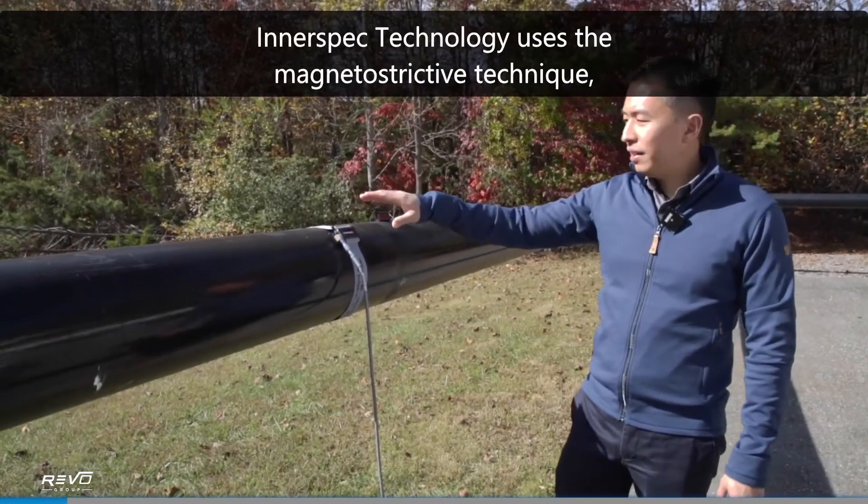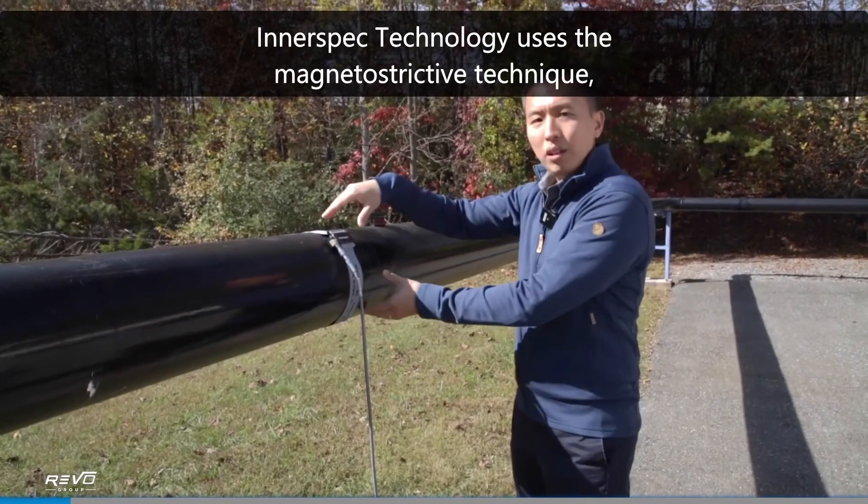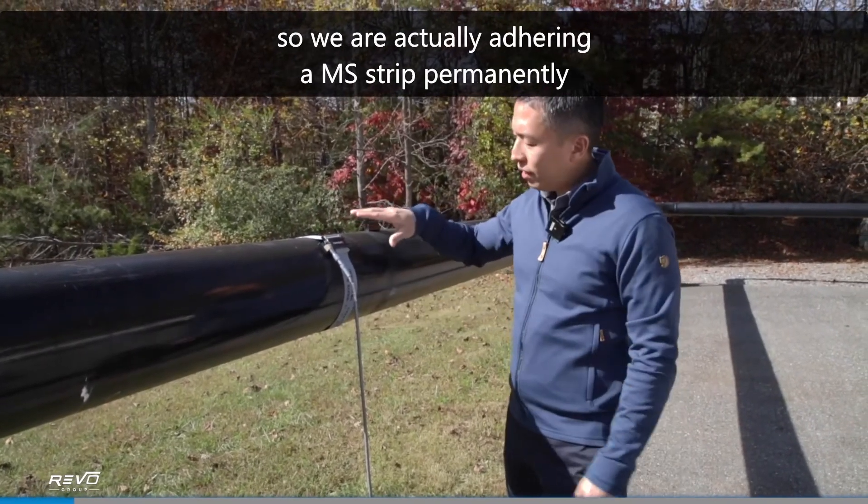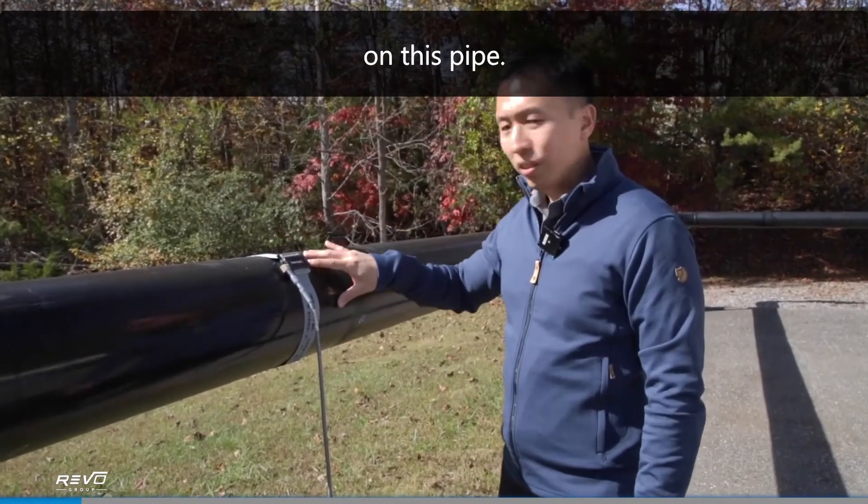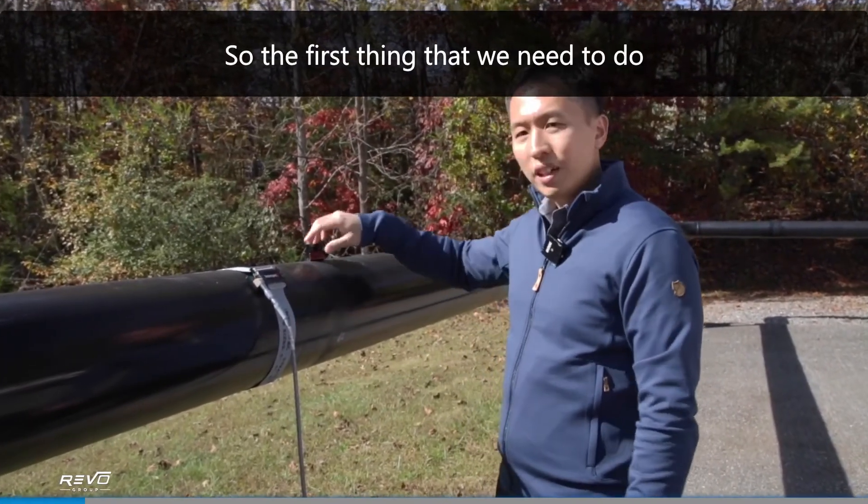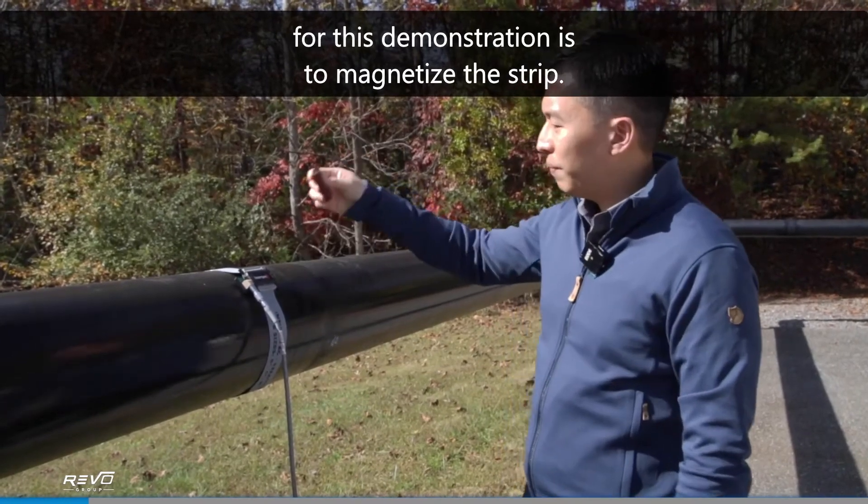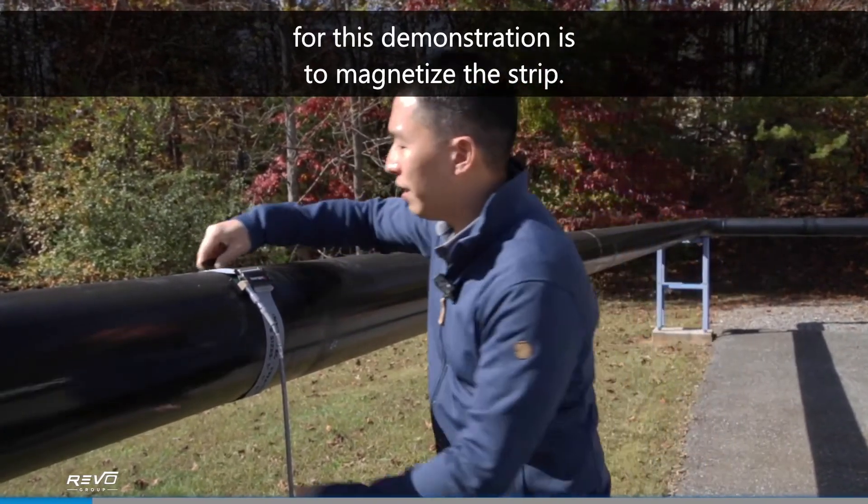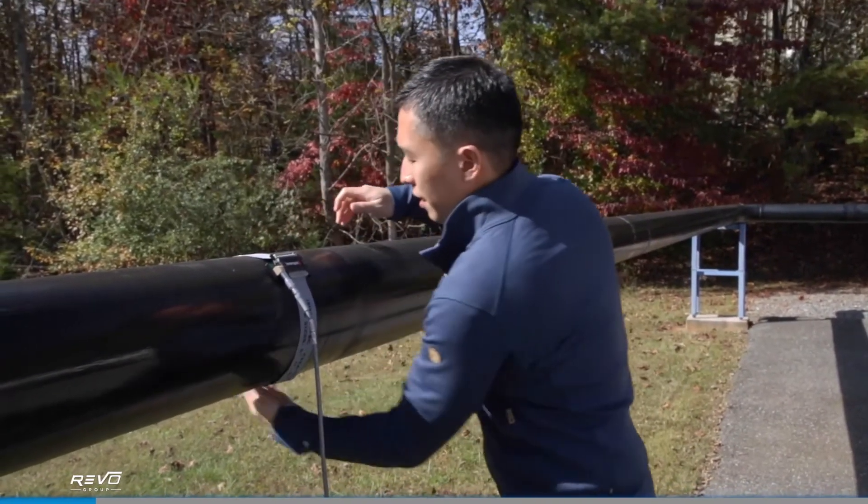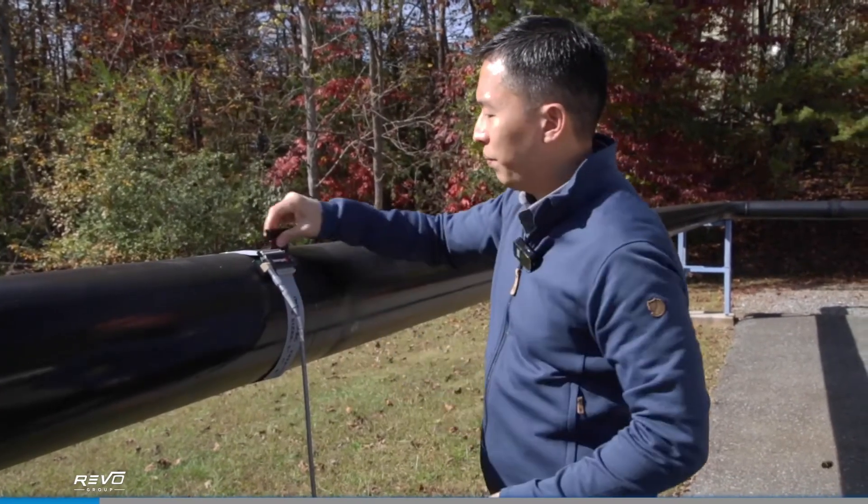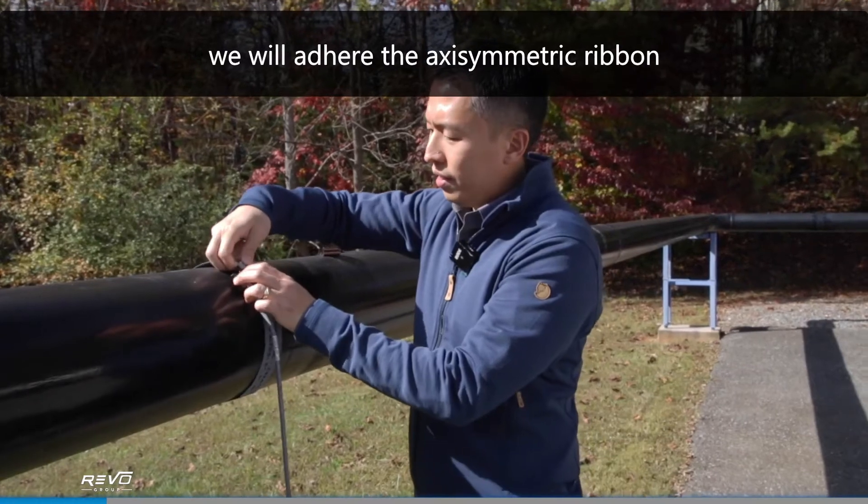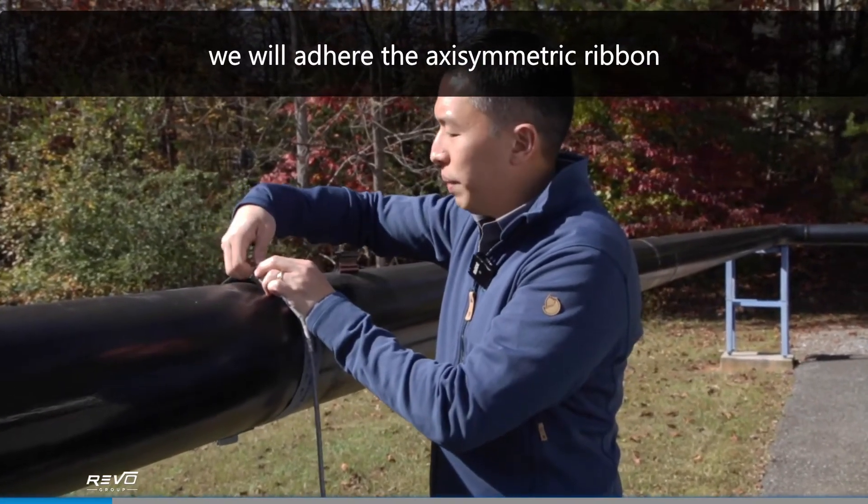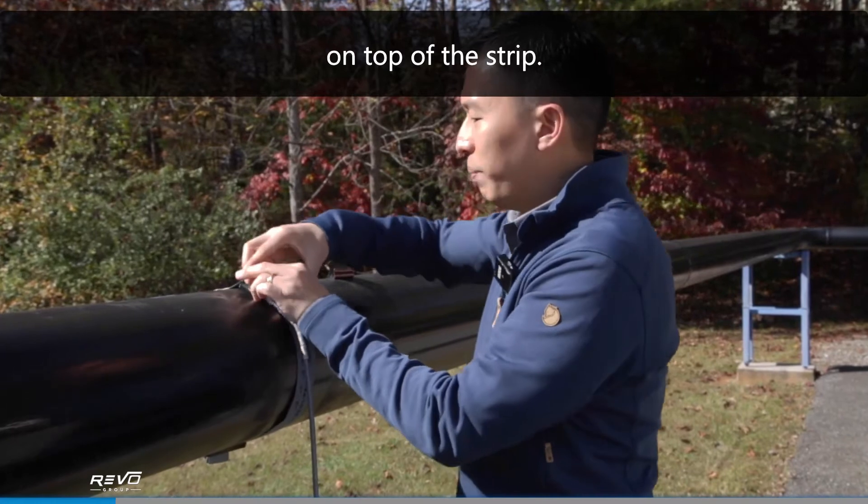For LRUT Lite, Innerspec technology uses the magnetostrictive technique, so we are actually adhering a MS strip permanently on this pipe. The first thing that we need to do for this demonstration is to magnetize the strip. Once we magnetize the strip, we will adhere the axisymmetry ribbon on top of the strip.